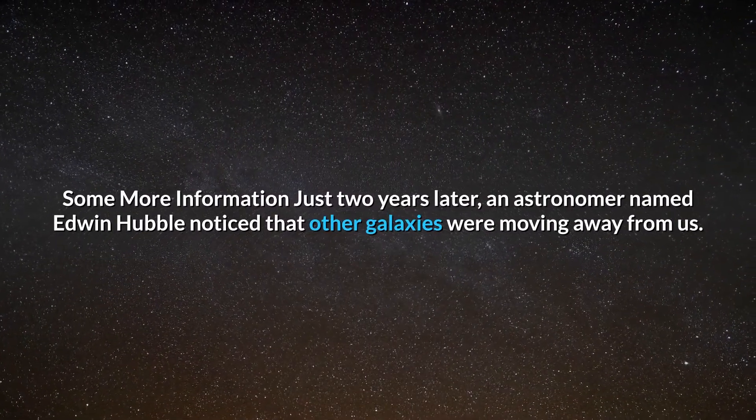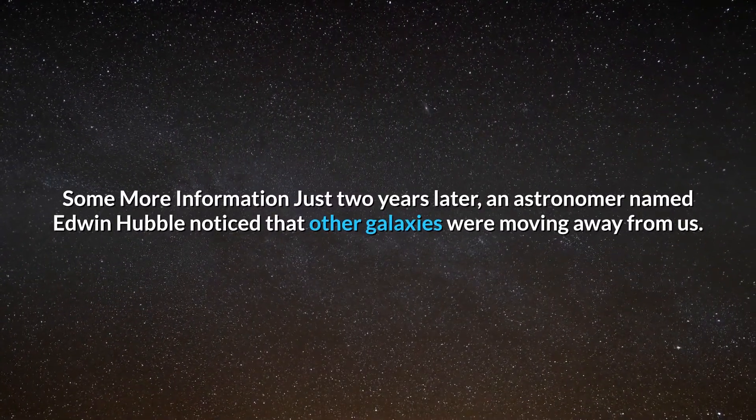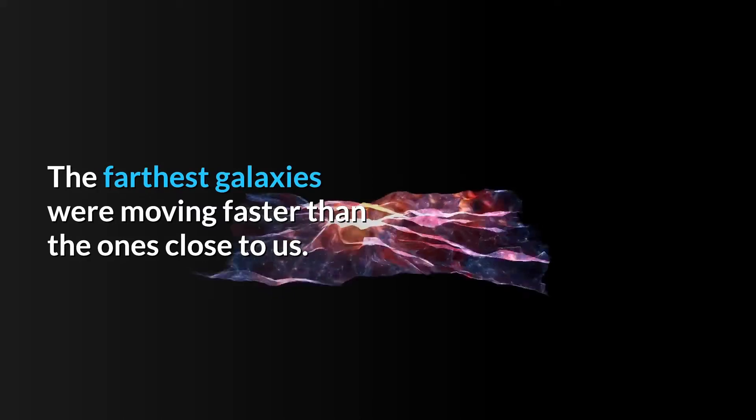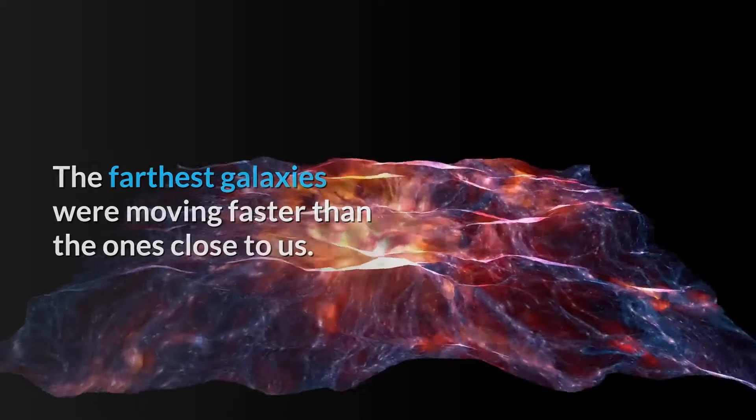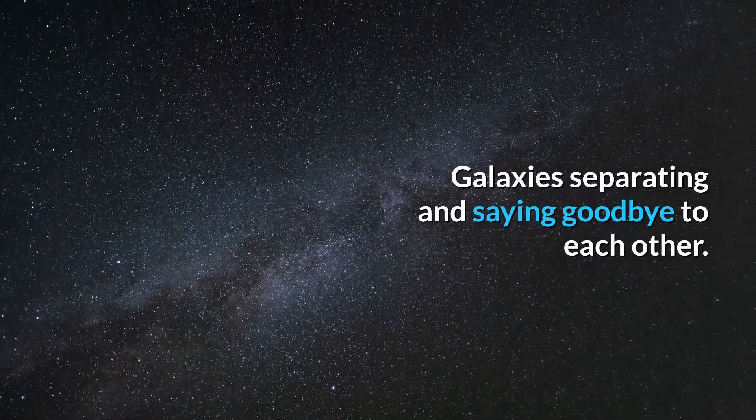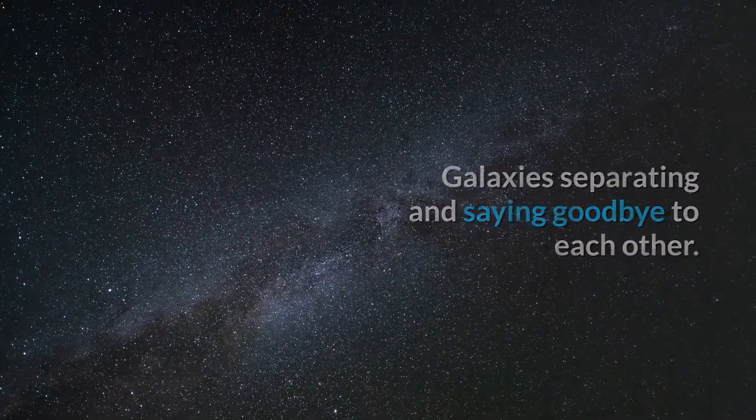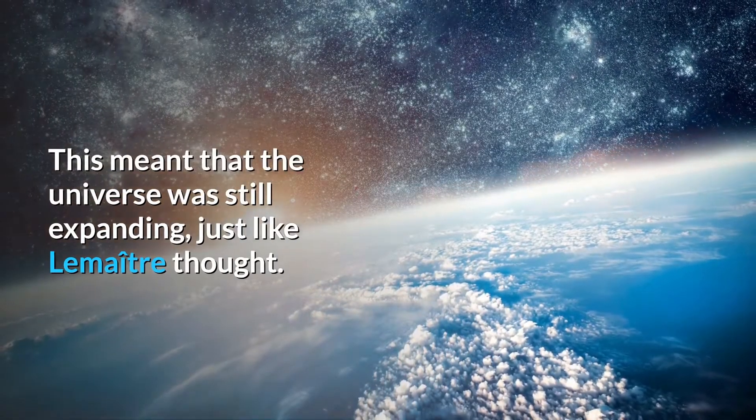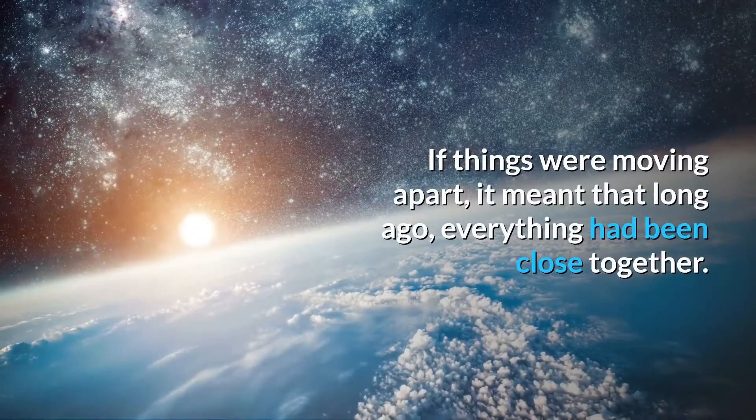Just two years later, an astronomer named Edwin Hubble noticed that other galaxies were moving away from us. And that's not all - the farthest galaxies were moving faster than the ones close to us. This meant that the universe was still expanding, just like Lemaitre thought.